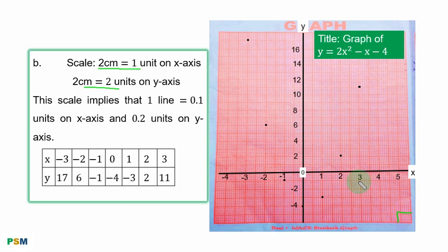On the Y axis, when you combine 2 boxes, you give it 2 units. The next becomes 4, and so on. This scale implies that 1 line is equal to 0.1 units on S axis and 0.2 units on Y axis.